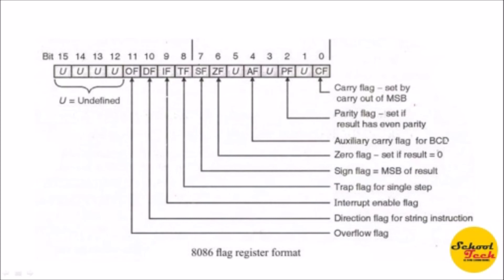The remaining three flags — TF, IF, and DF — are called control flags. These three control flags are normally set or reset by the programmer or designer. The Interrupt Flag (IF) is linked with the hardware maskable interrupt: when IF is set to one, the maskable interrupt is enabled and will be recognized and served by the processor; if IF is zero (reset), the interrupt is masked and will not be served.